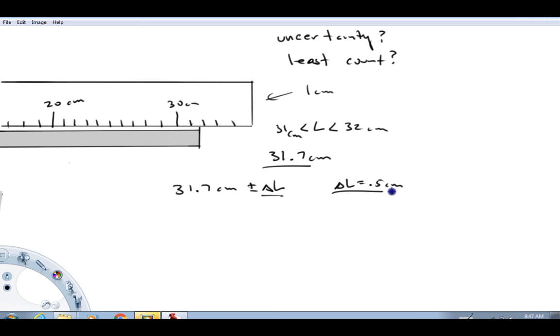Now, half the least count is just a good place to start. If you have more confidence in your measurement, you may decide that that uncertainty is a little less here. I can definitely see that this value is less than 32.